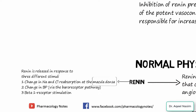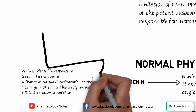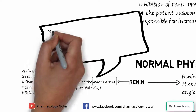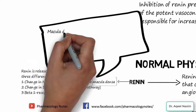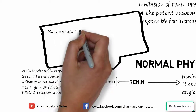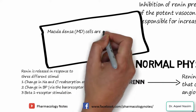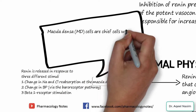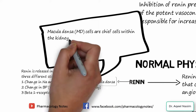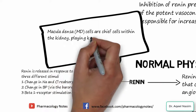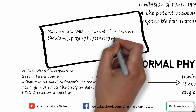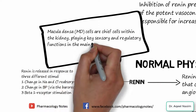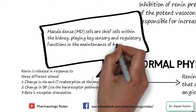Regarding the macula densa, MD cells are the chief cells within the kidneys. They play a key sensory and regulatory function in the maintenance of body fluids, electrolytes, homeostasis, and ultimately blood pressure.